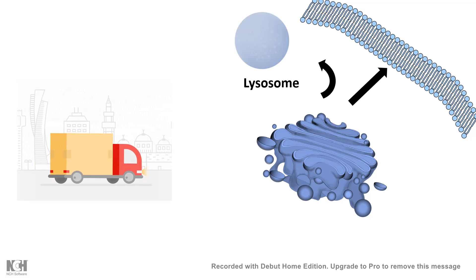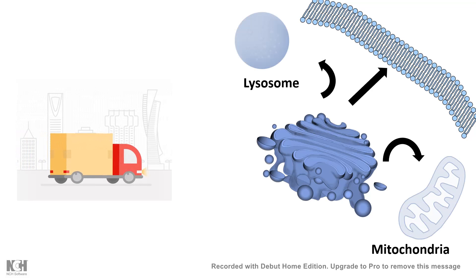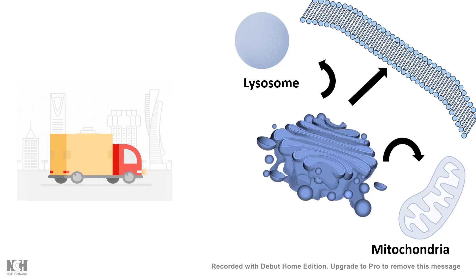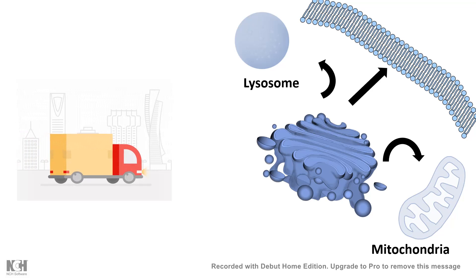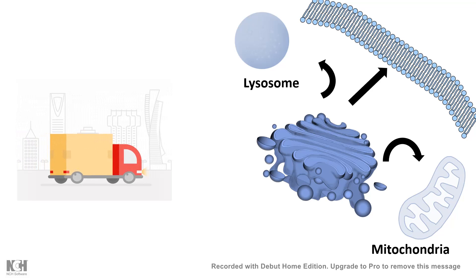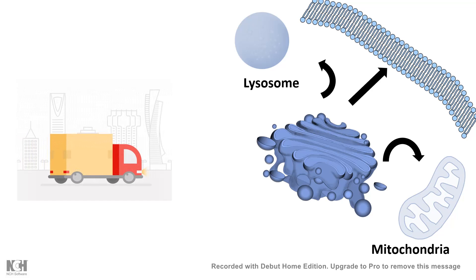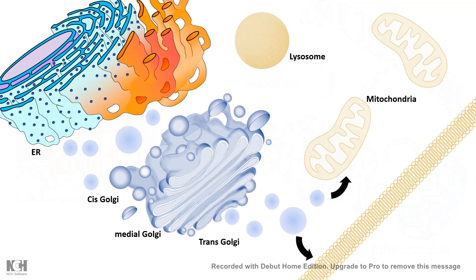A protein product can either be secreted, delivered to the lysosome, or delivered to mitochondria. The question is: how exactly is the address of where the product is going to be delivered determined inside the Golgi? Definitely there should be an address tag on the product, and we would look at what that address tag is on the protein.